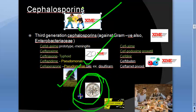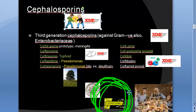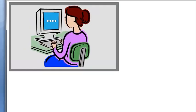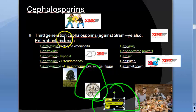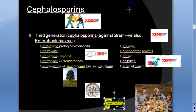Then there is ceftazidime — remember the 'dime' visual. Ceftazidime is effective against Pseudomonas. And cefoperazone — remember the 'zone' — also active against Pseudomonas, excreted in bile, and causes a disulfiram-like reaction. So the third generation parenteral drugs are: cefotaxime, ceftizoxime, ceftriaxone, ceftazidime, and cefoperazone.